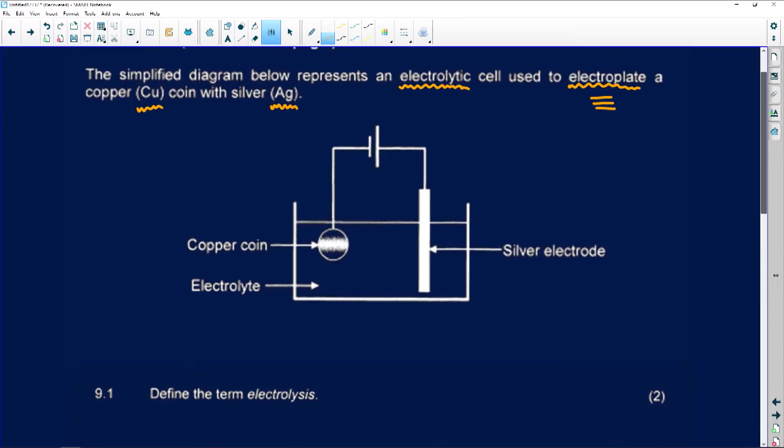What I would do first is go to my table, highlight my silver and highlight my copper, and then I'll see which one is an anode and which one is a cathode. But we're going to do it together step by step.